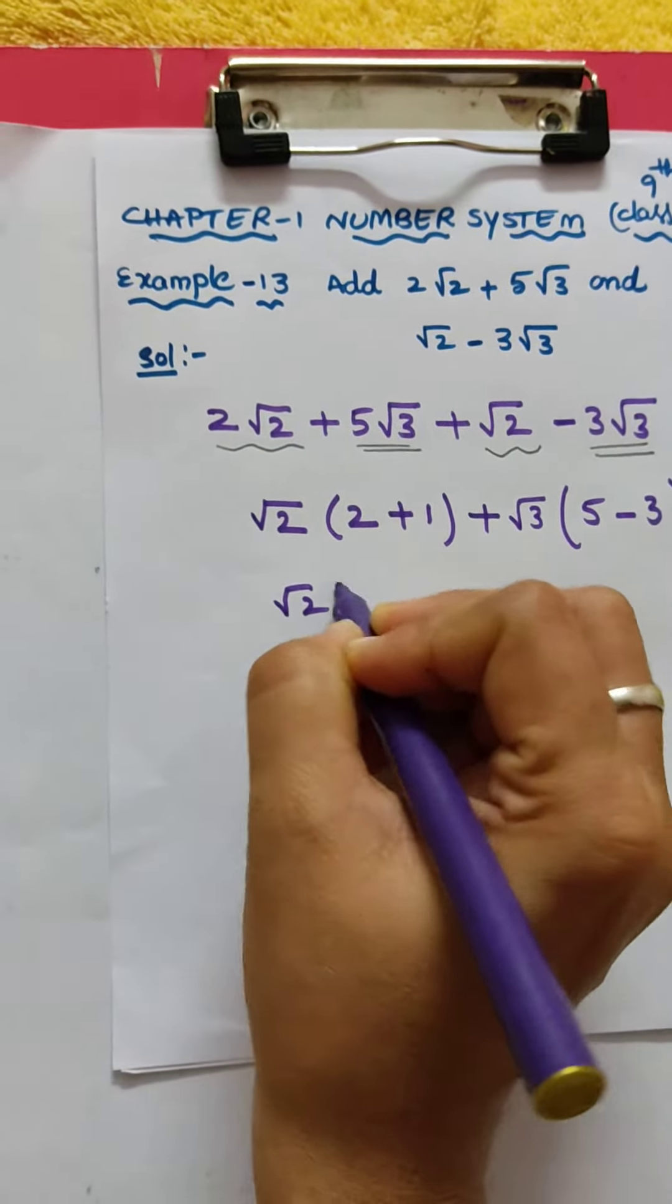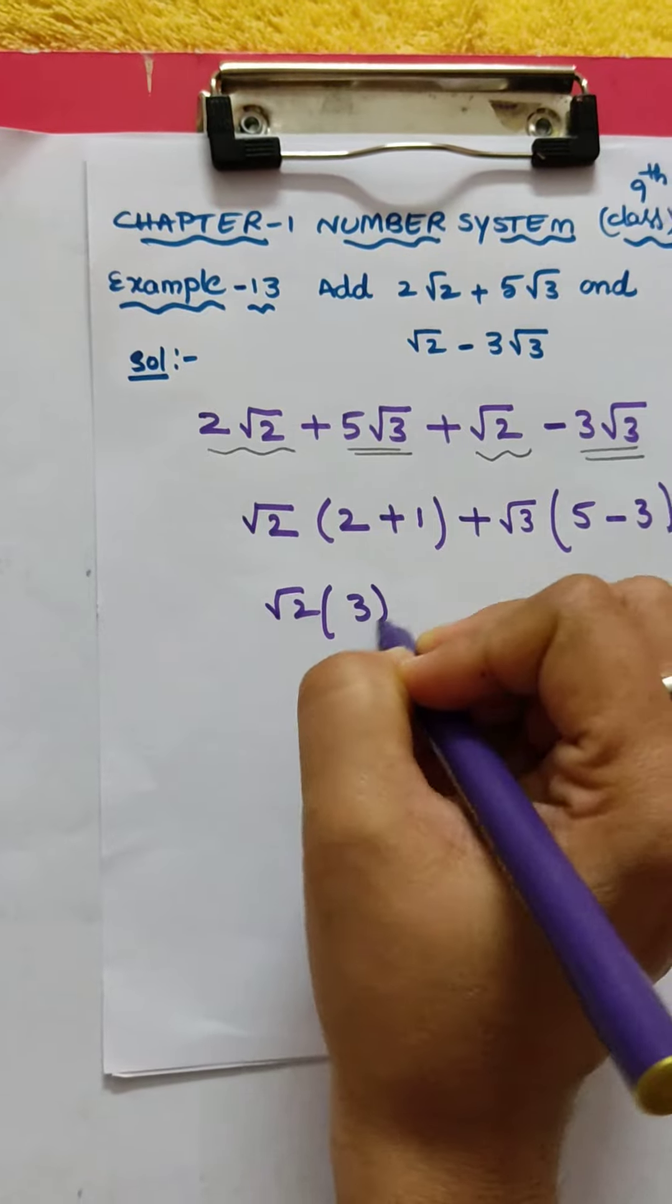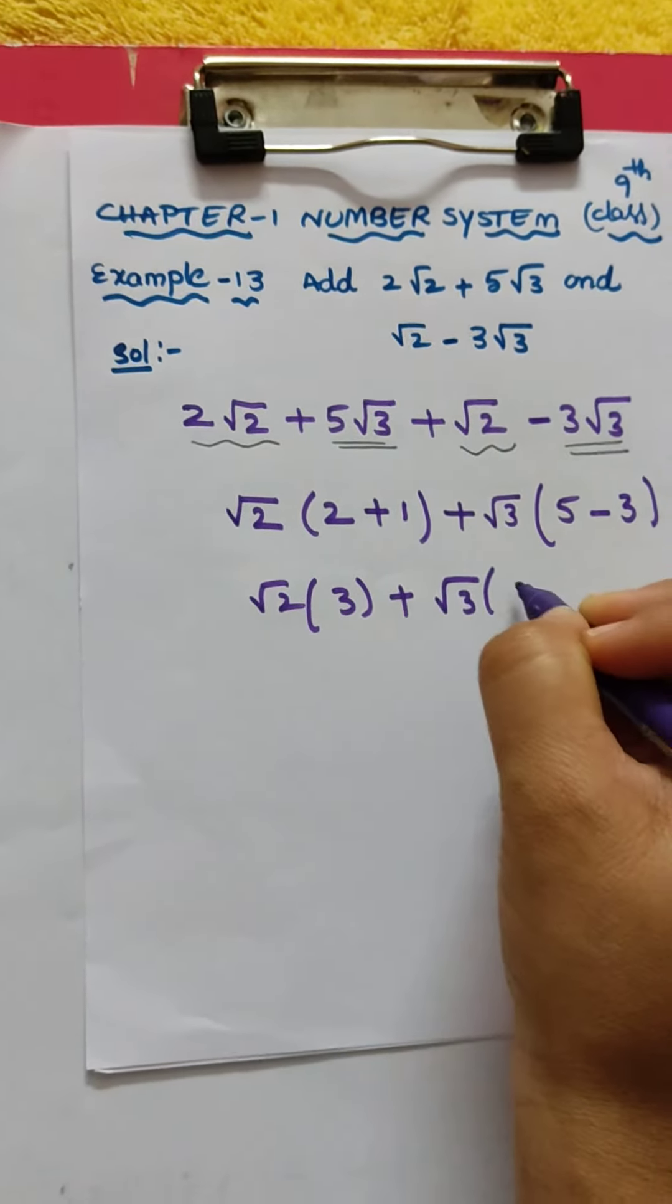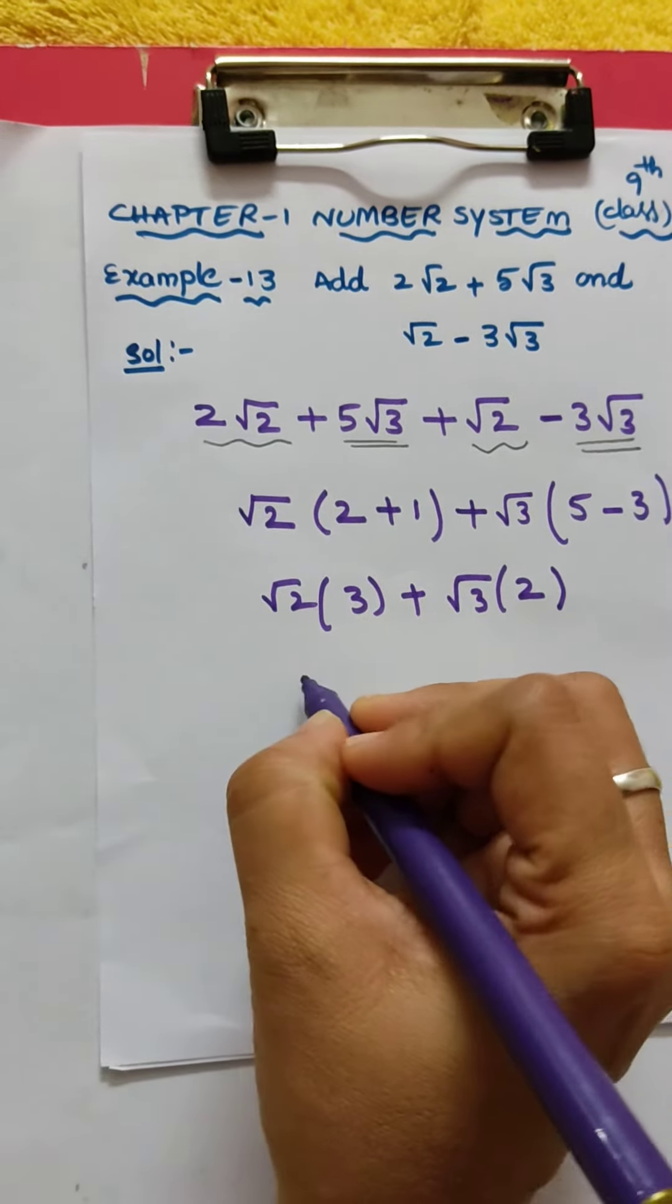So, √2 into (2 + 1) = 3, plus √3 into (5 - 3) = 2. So, the answer: